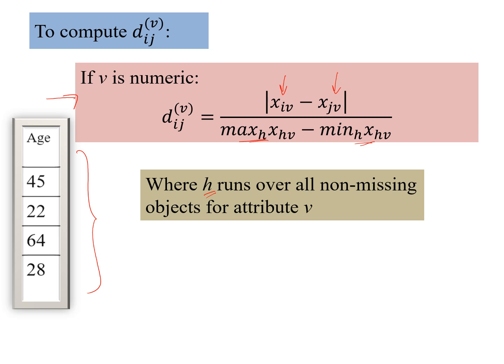Where we have this index h running over all non-missing objects. So we have already mentioned that some objects may not have a value for the given attribute. So those data objects we would be skipping and we would look at the other objects, other data points and compute the max and the min. So here in this example, we don't have any missing objects for this attribute numeric. So the max is 64, so this is our max and the min is 22.